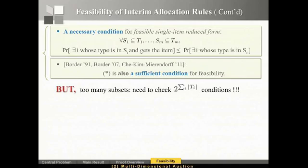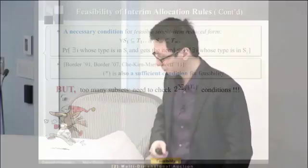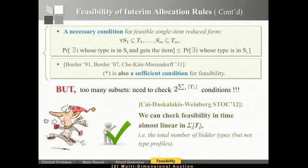Even with complicated distributions or many bidders there is a systematic way to check feasibility. However, enumerating all possible subset choices to check the condition takes exponential time. After significant work with Meta and Costas, we showed we can check feasibility efficiently — in time almost linear in just the sum of bidder types, not type profiles.